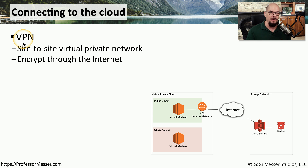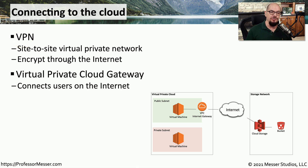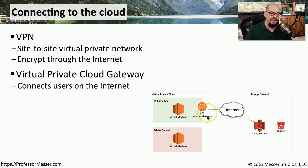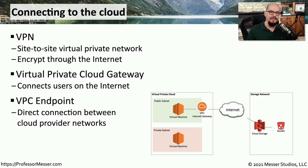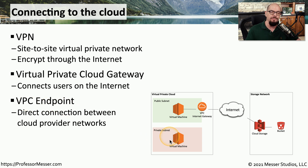There may be times when you're building out your own virtual private cloud but would like to provide access to others on the internet. To provide that access, you would create a virtual private cloud internet gateway and connect your internet into that gateway system, allowing anyone on the internet to use that gateway to gain access to your virtual machines and application instances. It's becoming increasingly common to use many different cloud providers, and there may be times when virtual systems at one cloud provider need to access data or storage at another. To connect those two together, you would use a virtual private cloud endpoint to give that direct connection between those cloud providers.